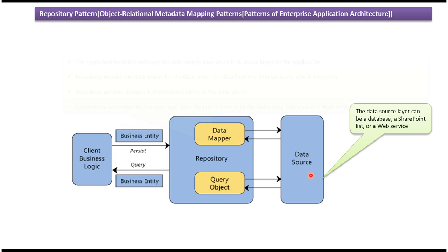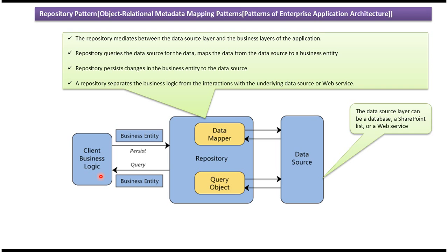Suppose the Business Logic wants to query some data from the Data Source. Then what the Business Logic will do is it will send a query to the Repository. What the Repository will do is it will query the Data Source for the data, get the data, map the data to the Business Entity, and send the Business Entity to the Client Business Logic.